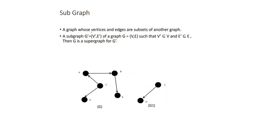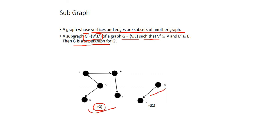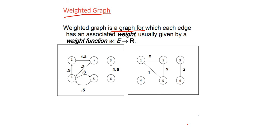A sub-graph is a graph whose vertices and edges are subsets of another graph. It is represented as G' = (V', E'), where V' is a subset of V and E' is a subset of E, for graph G. G is then called the super graph of G'. For example, taking vertices C and D as a subset of graph G forms a sub-graph G', which is represented as G1 here.